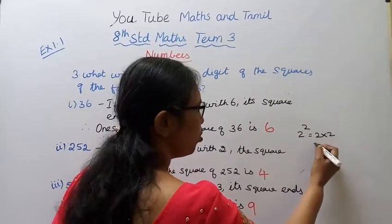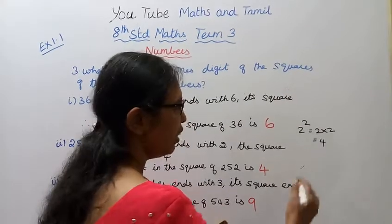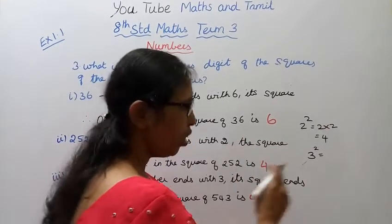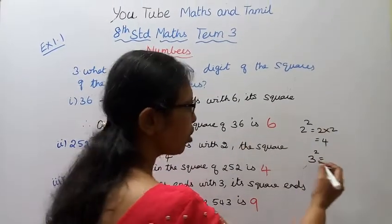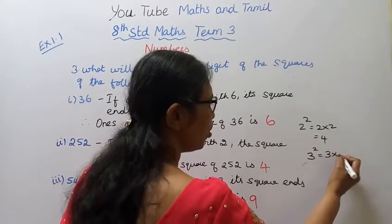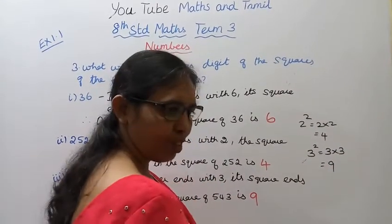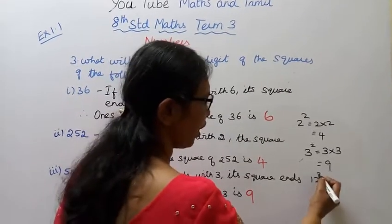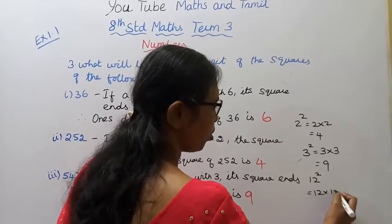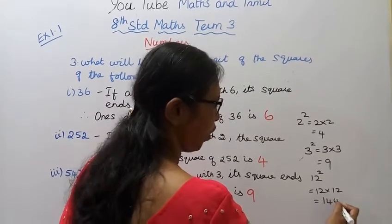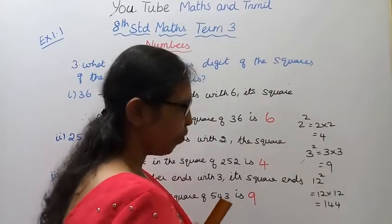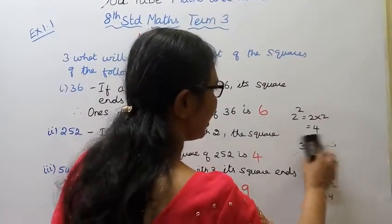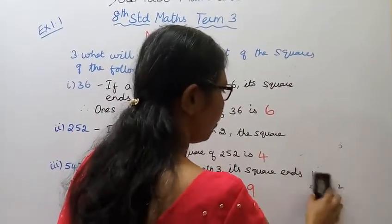Two into two equals four. Three square - three into three equals nine. Twelve square - twelve into twelve equals one forty four. We learned these concepts in seventh standard. Now let's follow the question.